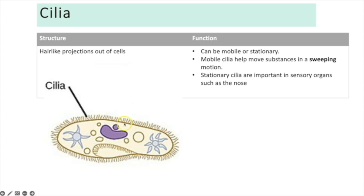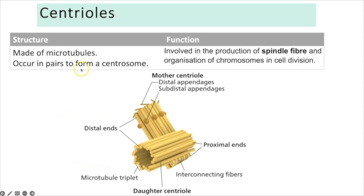Mobile cilia move in a wave-like motion to sweep substances along — for example, in the trachea they sweep mucus up and out to prevent lung infection. Stationary cilia are important in sensory organs such as the nose.